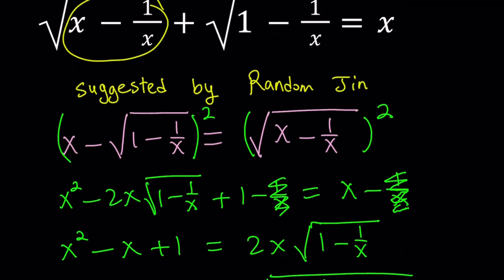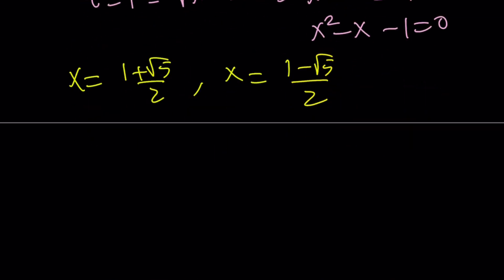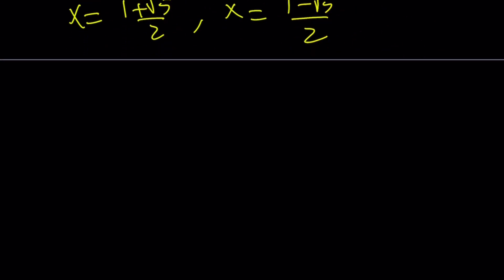The expressions inside the radicals need to be non-negative, right? They can't be negative. Can they be 0? That's another question. So x minus 1 over x, because our original equation, if you remember, it was like this. This is what we were trying to solve.